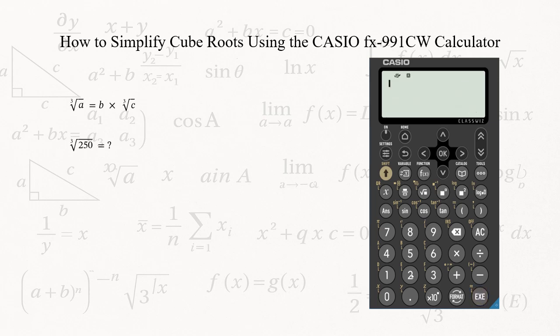Let's try an example: simplify the cube root of 250. Input 250 and press equals. Press Format. Select the third option, Prime Factor.